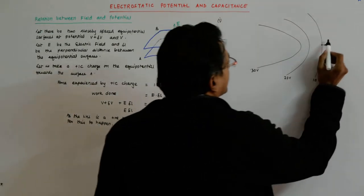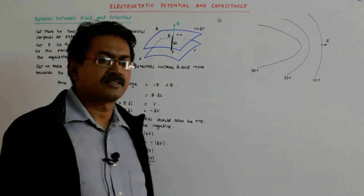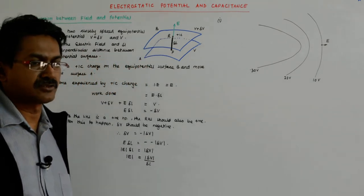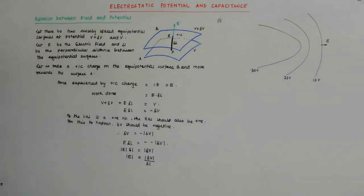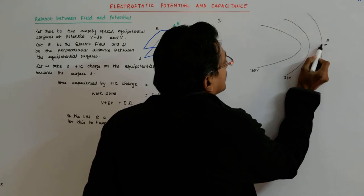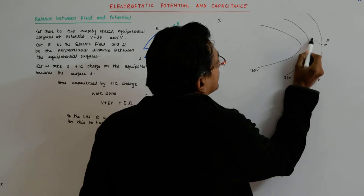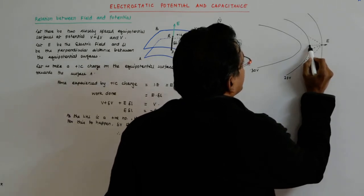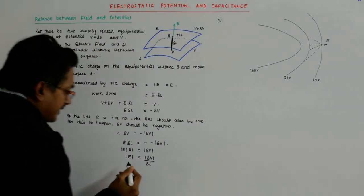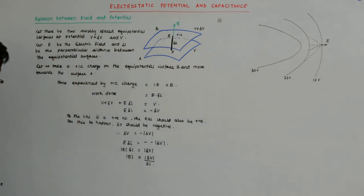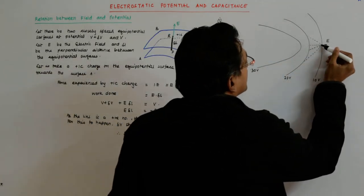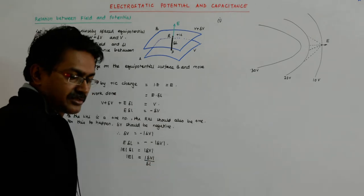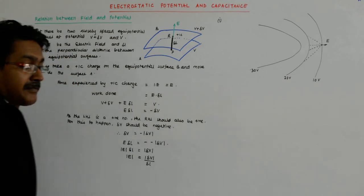Why? Because all electric fields are perpendicular to the equipotential surfaces, or all equipotential surfaces are perpendicular to the electric fields. Now, if I am at this point, it is not this direction, it is not this, it is also not this — it has to be this. Why? It is del V upon del L — it is the direction in which the potential falls the fastest, or increases the fastest, with respect to the distance.